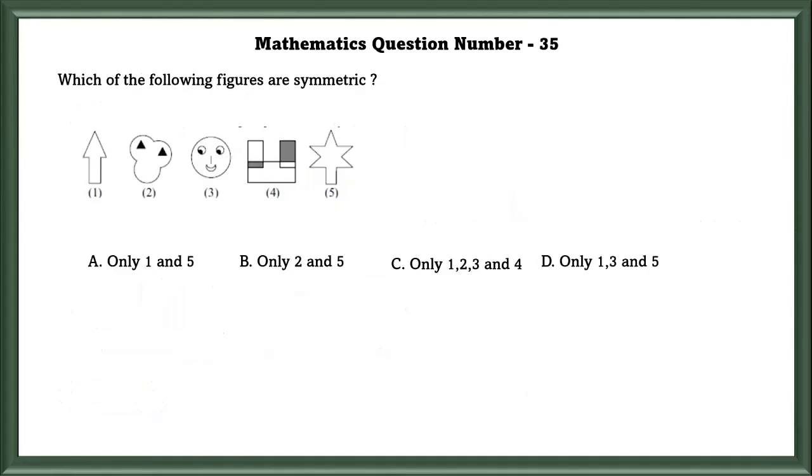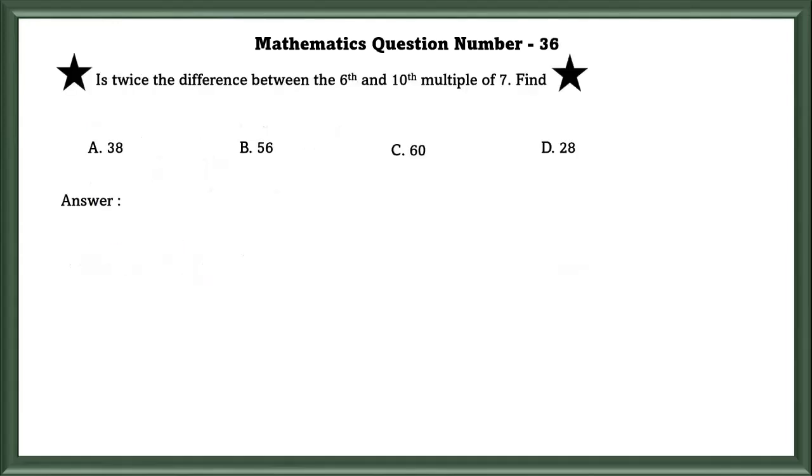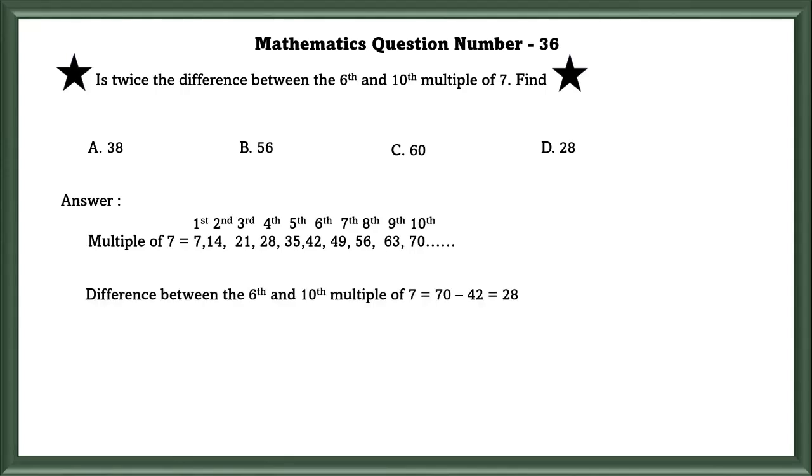Mathematics question number 35. Which of the following figures are symmetrical? The figures 1 and 5 are only symmetrical. Mathematics question number 36. Star is twice the difference between the 6th and 10th multiple of 7. Find star. The 6th multiple of 7 is 42 and the 10th multiple of 7 equals 70. The difference between these two equals 28. Since they have said that the star is twice the difference, so 28 into 2 equals 56. So the star is 56.